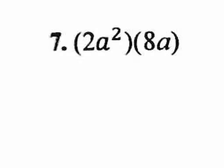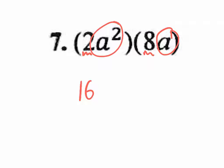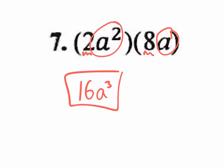Let's go to number seven. Again we are multiplying and we have coefficients — numbers in front of the letters. Multiply the big numbers: 2 times 8 is 16. Then multiply a squared times a to the 1, which means you're adding the exponents to get a to the third power. So 16a to the third is the answer.